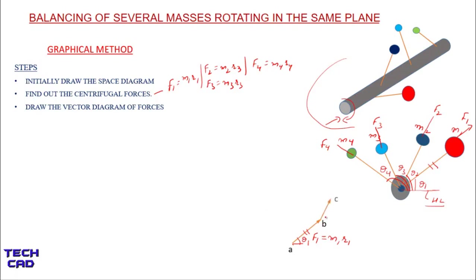In the same way, from B to C draw F2 with magnitude m2·r2, parallel to the F2 direction in the space diagram. Similarly draw F3 at angle theta3 with its corresponding magnitude, and then F4 at angle theta4. This completes the vector diagram.